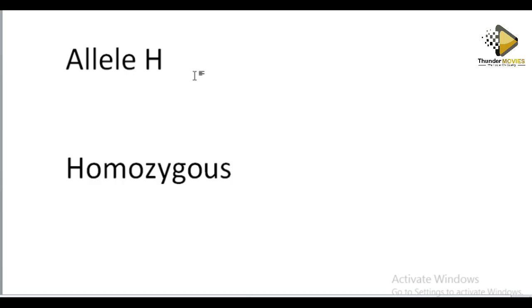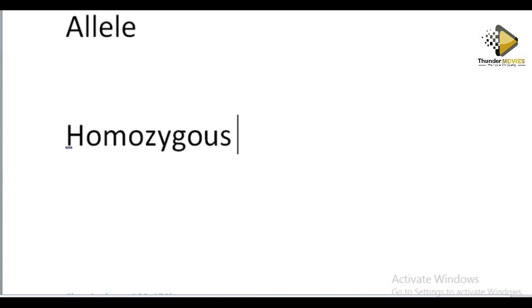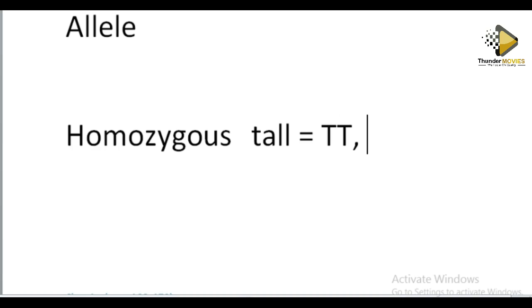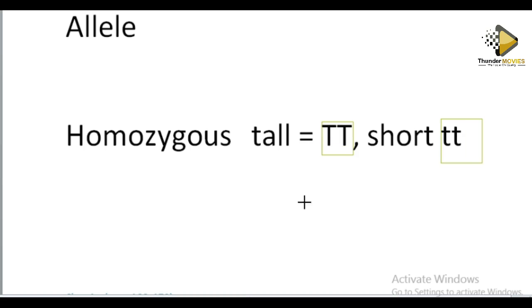Another term you need to know is homozygous. The word 'homo' means something which is the same, and this comes from the word zygote. So in this case, the zygote has two alleles of the same kind. For example, you can be tall with capital T capital T — since the alleles are the same, it means that you are homozygous. Or you can be short, in which case you will be small t small t. So if the two alleles are of the same kind, we say they are homozygous.